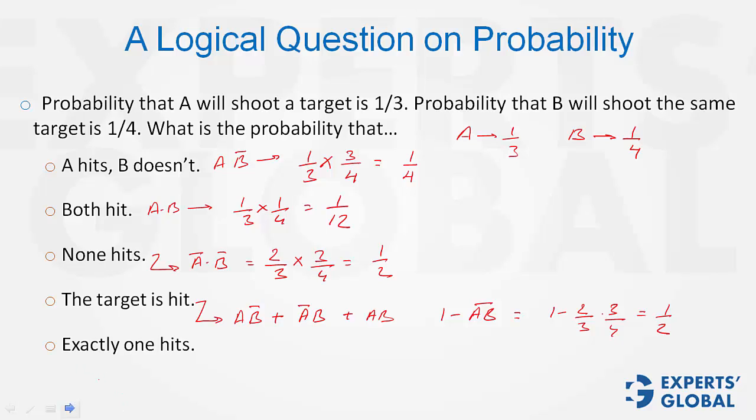Exactly one hits, so two cases. A hits, B doesn't, plus A doesn't and B does. So this is 1 by 3 into 3 by 4, A into B bar, plus A bar is 2 by 3 into B is 1 by 4. This is 3 plus 2, 5 upon 12. That is the required answer.